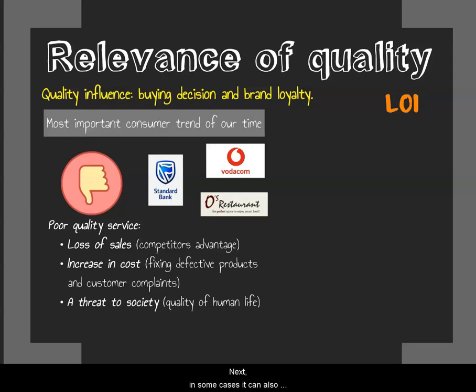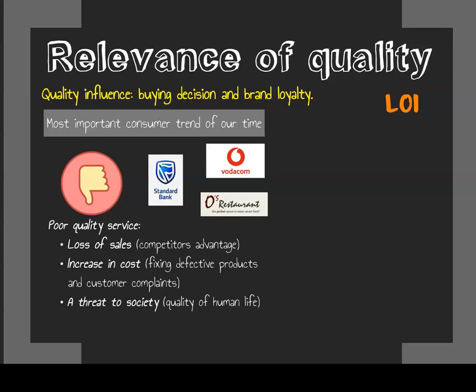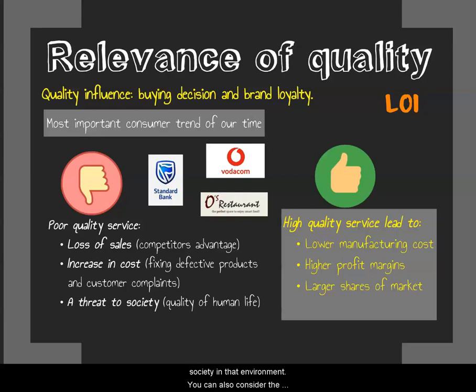In some cases, poor quality can also lead to a threat to society. The products of an industrial society exert an influence on the general quality of human life. For example, a dump site that is not managed properly is still a local and public service, and you can imagine the impact it has on human life — it is definitely a threat to the health of the society in that environment.